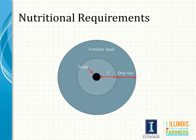Soil analysis is recommended every three years to provide the most accurate information to determine nutritional needs of an orchard beyond the initial pre-plant fertilizer recommendation. Soil analyses are not nearly as accurate in determining the nutritional status of the orchard because factors such as rootstock, crop load, soil type, and weather conditions influence whether or not trees are absorbing enough nutrients to produce maximum yields. The main value of a soil test is to monitor the soil pH.